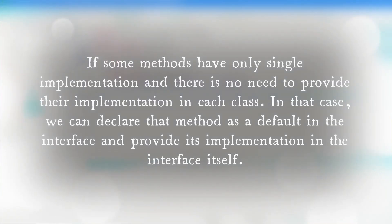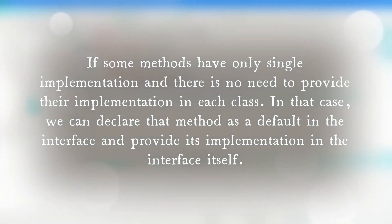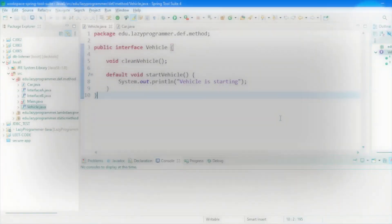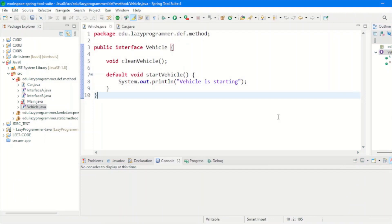In addition to that, sometimes methods have only a single implementation and there is no need to provide their implementation in each and every class which is extending or implementing those interfaces. In that case we can declare the method as default in the interface and provide its implementation in the interface itself, so that it can be used in all the implementing classes directly. Let's understand the syntax of default methods through an example.